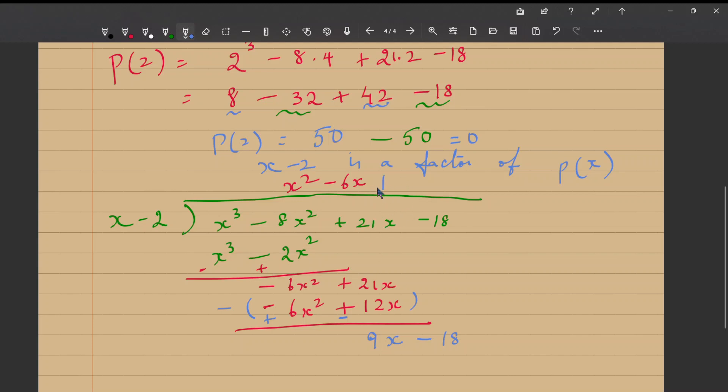So our next quotient term would be 9, because 9 into x is 9x. Let me write in red to keep the continuity. So +9 is 9. This gives you 9x - 2 into +9 is -18. So yes, now my remainder is 0.